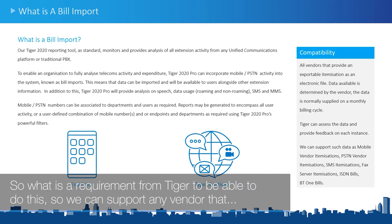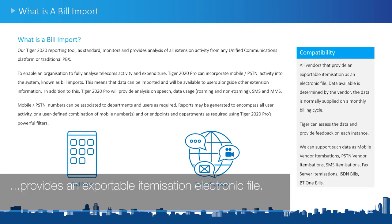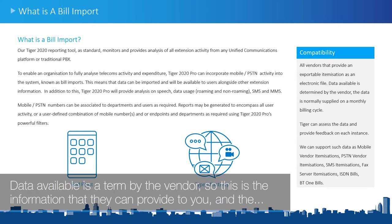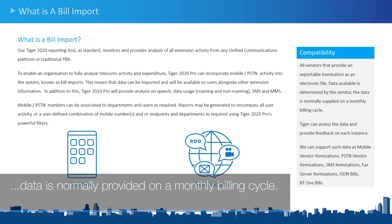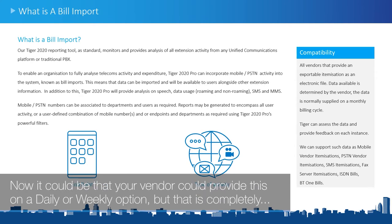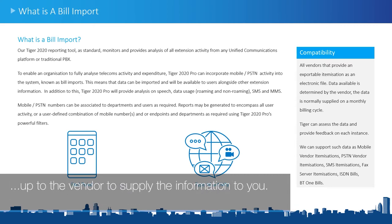So what is required from Tiger to be able to do this? We can support any vendor that provides an exportable itemized electronic file. The data available is determined by the vendor, so this is the information they can provide to you. The data is normally provided on a monthly billing cycle, though your vendor could provide this on a daily or weekly basis — that is completely up to the vendor.